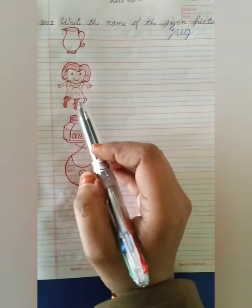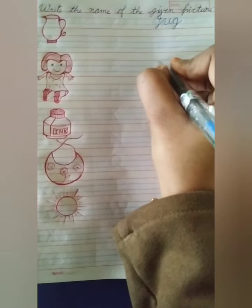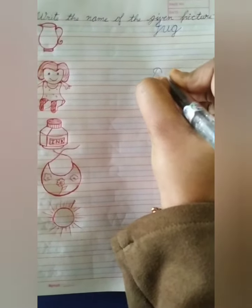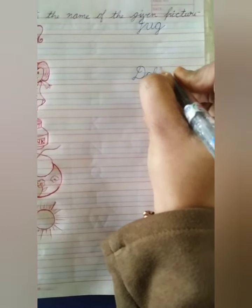What is this? This is a doll. So, write here doll. What is the spelling of doll? D-O-L-L.